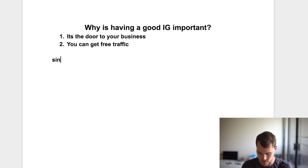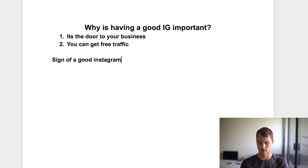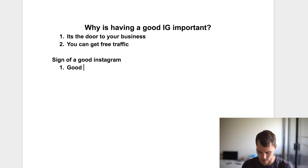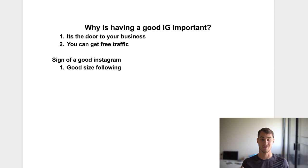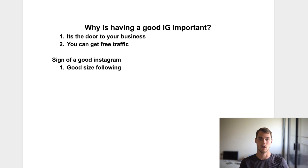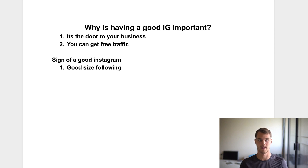What are some signs of a good Instagram? What are some things that most good Instagrams have? Well, number one — and this is the first thing people are going to see — you need to have a good-sized following. If you're following 500 people and only have 37 followers, it's going to look like a scam, not a legitimate business. If you have 1,000, 1,500, or 20,000 followers, people will want to follow because of the psychology of social proof — fear of missing out, that kind of thing.